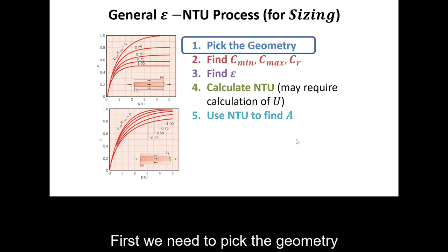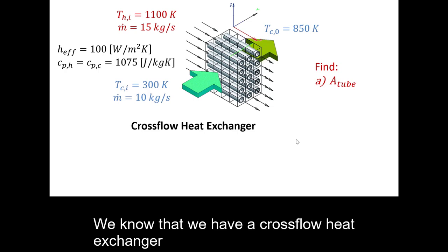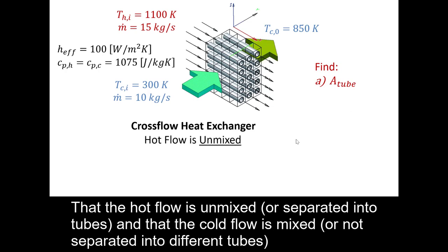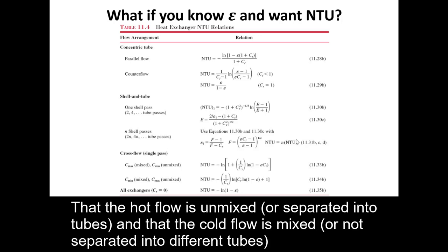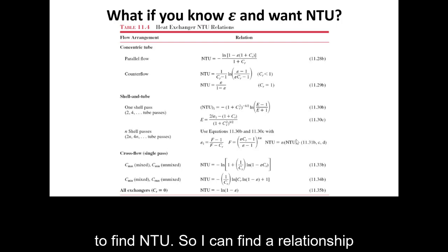First, we need to pick the geometry. We know that we have a cross flow heat exchanger. That the hot flow is unmixed or separated into tubes. And that the cold flow is mixed or not separated into different tubes. I know eventually I'll need to use a calculated effectiveness to find NTU. So I can find a relationship where NTU is a function of effectiveness. This is dependent on the geometry.